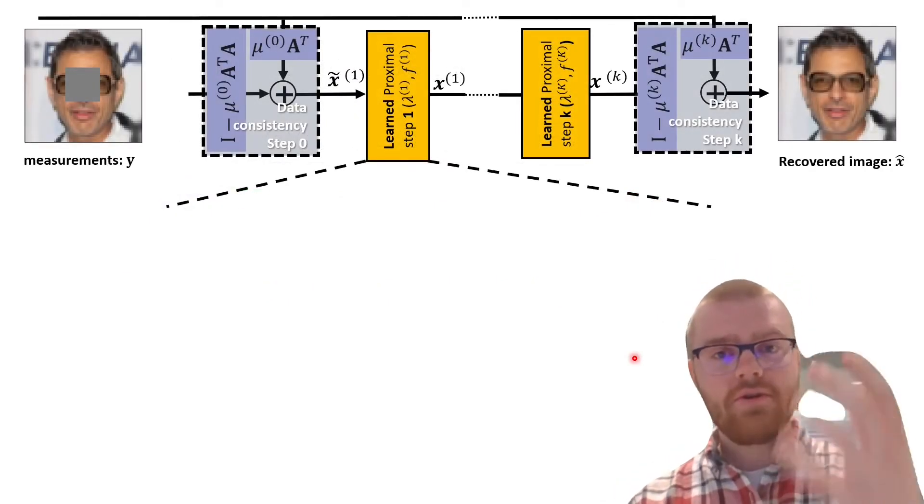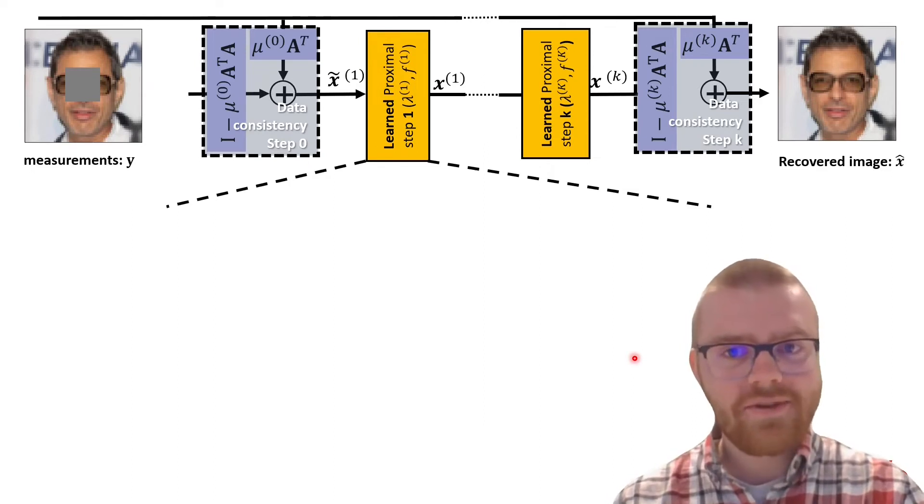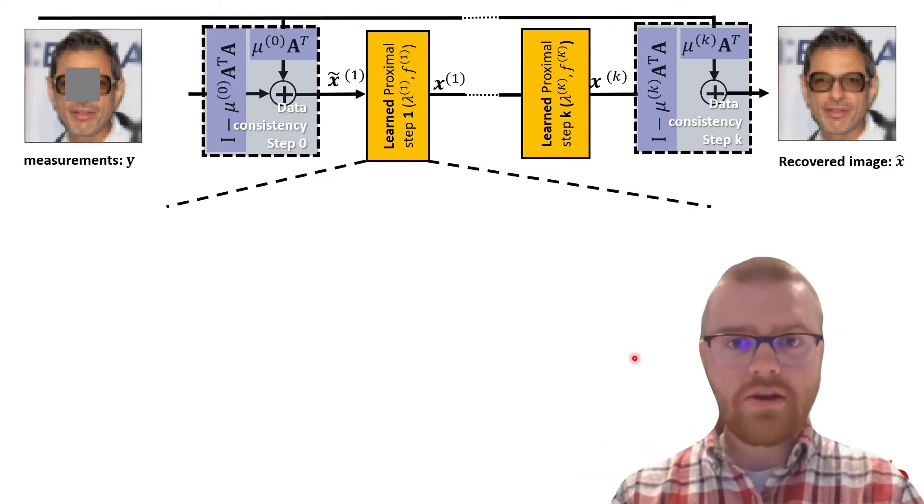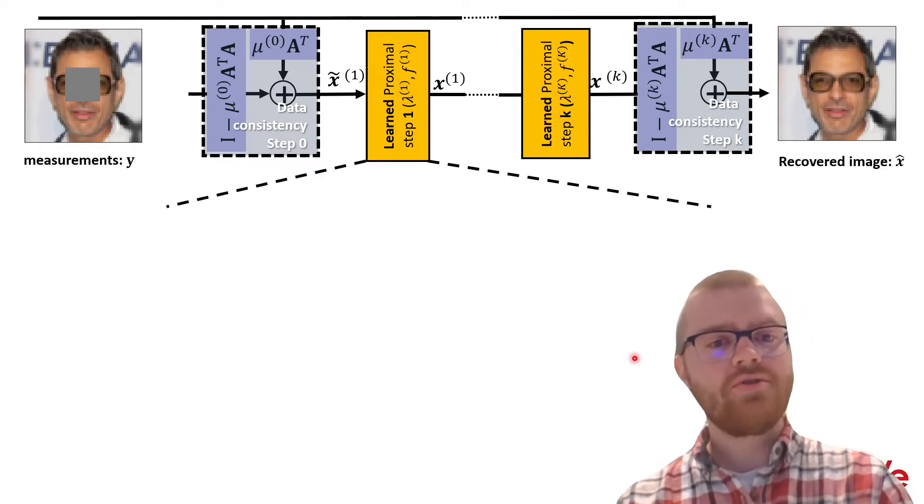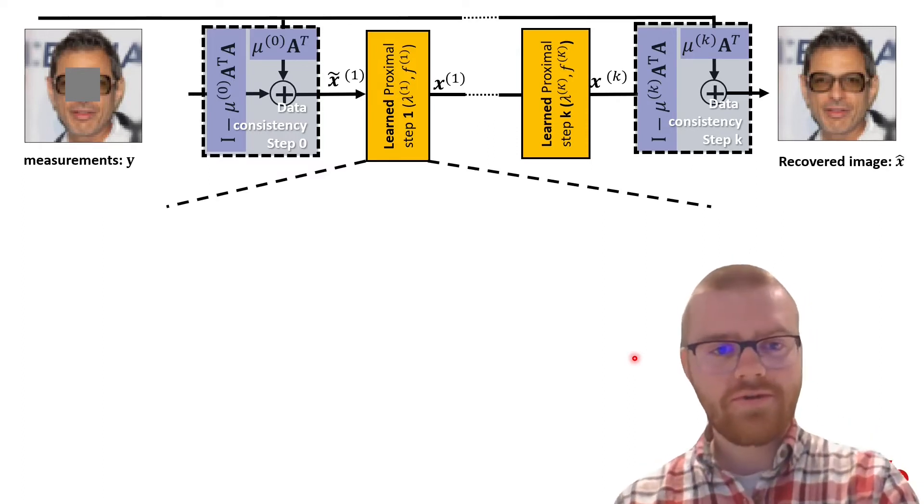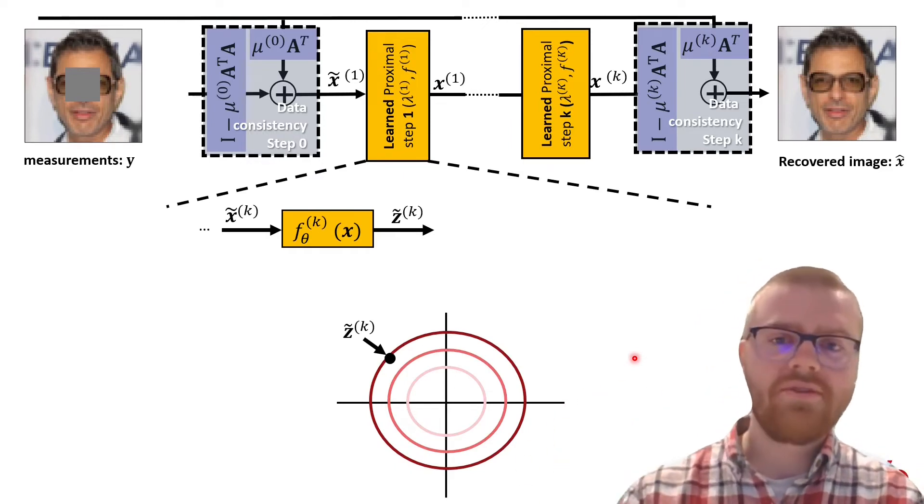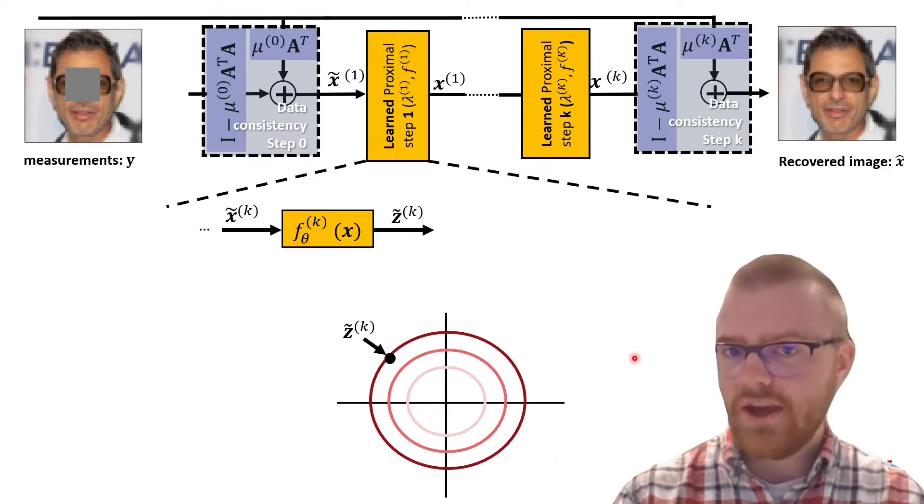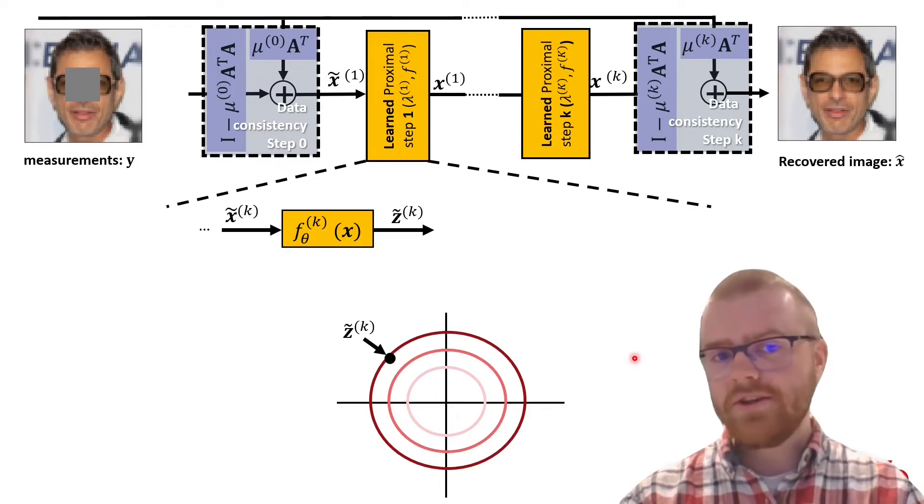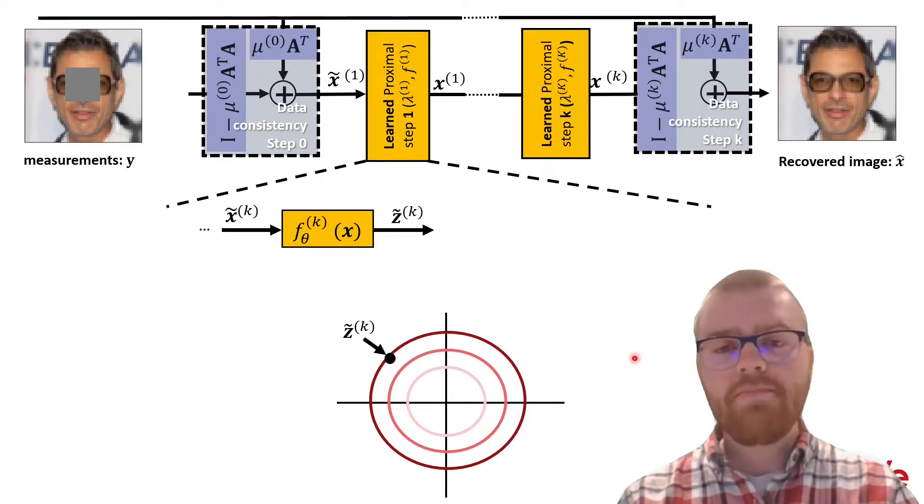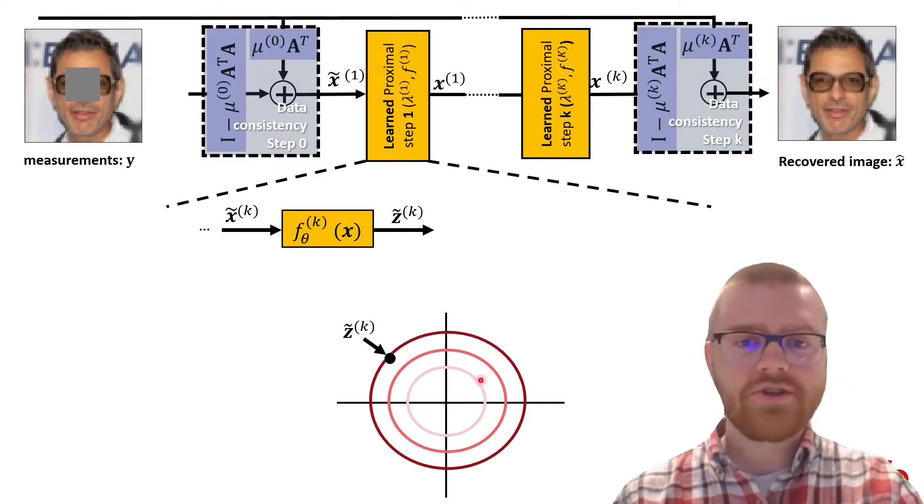Coming back to our neural proximal gradient descent algorithm, the data consistency step we have not touched, but the learned proximal step we are now going to change with normalizing flows. An image comes in on the left, an idea of an image, so in this case x tilde here, and we will map x tilde to this Gaussian latent space using our flow, the forward flow. We will map to some place in this Gaussian space here z.